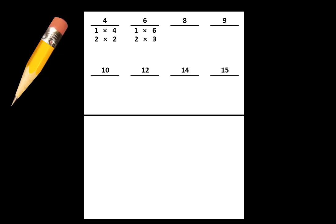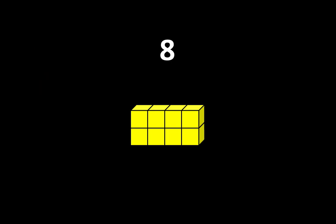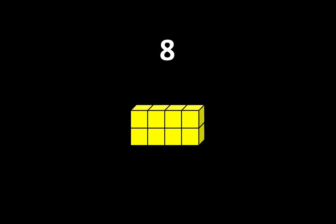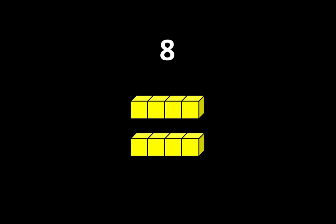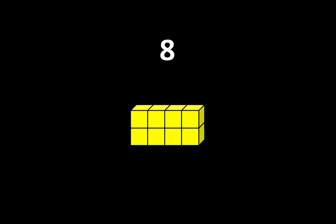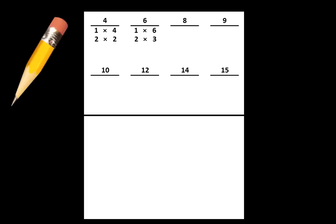Let's move to the number 8. We can think of 8 as 1 group of 8 or 8 groups of 1. We can also think of it as 2 groups of 4 or 4 groups of 2. On your paper, write that we can think of 8 as 1 group of 8 or 8 groups of 1, and we can also think of it as 2 groups of 4 or 4 groups of 2.